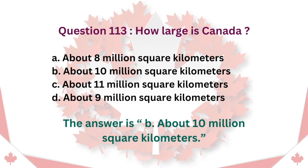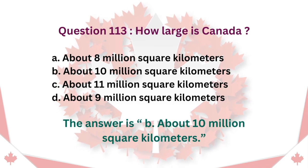Question 113: How large is Canada? A. About 8 million square kilometers. B. About 10 million square kilometers. C. About 11 million square kilometers. D. About 9 million square kilometers. The answer is B. About 10 million square kilometers.